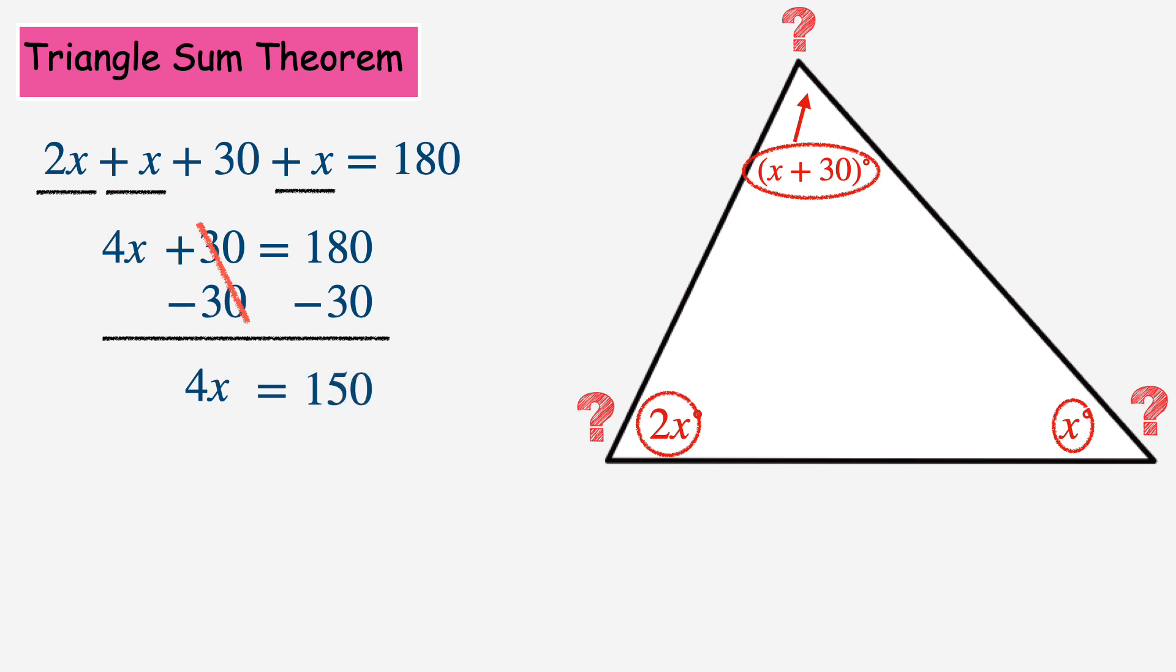Now I can solve for x by dividing each side of this equation by 4. The 4s on the left side will cancel each other out, leaving just the x. And 150 divided by 4 is 37.5. So the value of x is precisely 37.5 degrees.